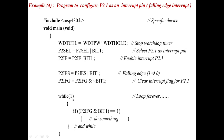Next, while(1) means always true, so this loop will check every time. If P2IFG & BIT1 is true, that means port 2.1 is 1 — do something, whatever operation you want to perform whenever the interrupt occurs. We can define that here. Like that, we are defining P2.1 as the interrupt pin at the falling edge.